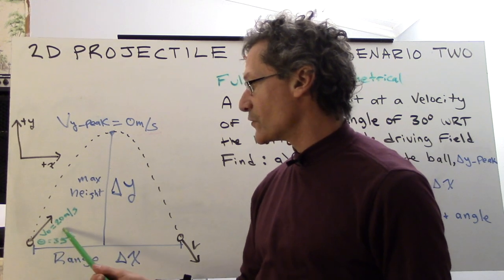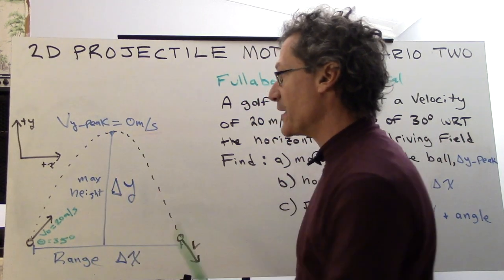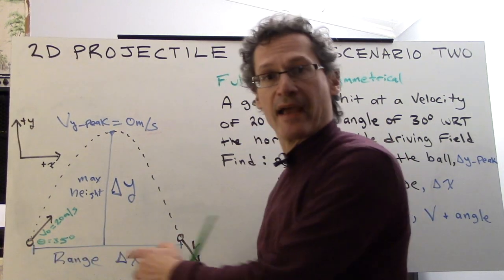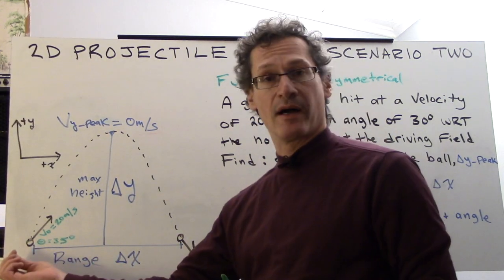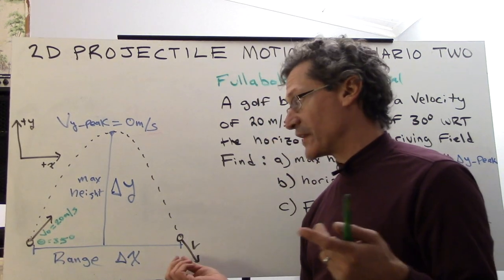Here we go. Here is the v-naught at 20 meters per second, 35 degrees, max height delta-y. That's the peak. And here's the range, delta-x, that goes from the origin, where it's launched, all the way to its landing spot.